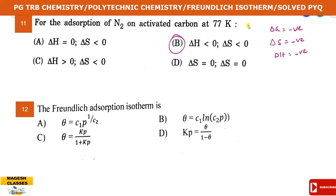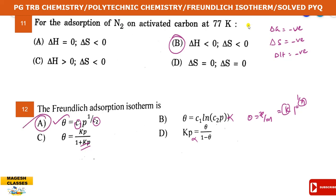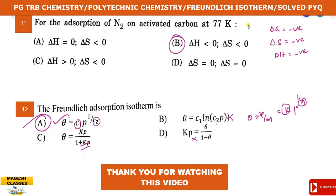For the Freundlich isotherm, theta (surface coverage) equals x by m, which equals k into p power 1 by n. The answer in this case involves constants c1 and c2 where theta equals c1 into p. Your answer is a. This is the end of the presentation. I hope it is useful to you. If you have any queries, post them in the comment box. Thank you for watching.